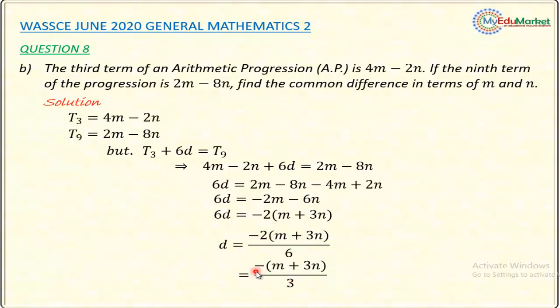So, with this, I have answered this question. D is now equal to minus M plus 3N all over 3.